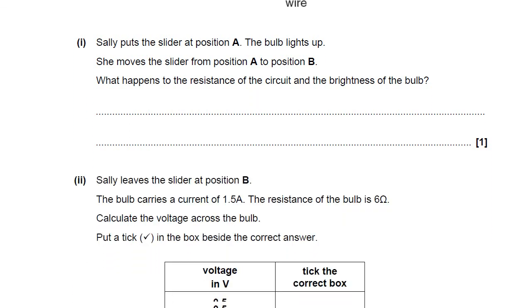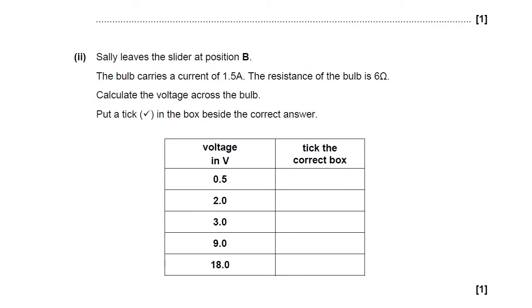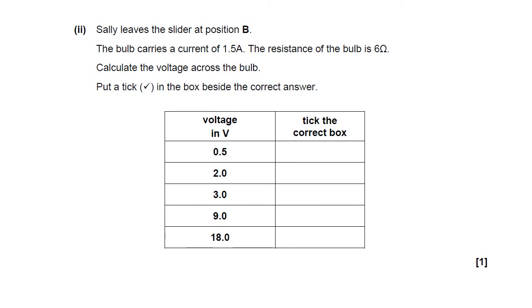Sally leaves the slider at position B. The bulb carries a current of 1.5 amps and the resistance of the bulb is 6 ohms. So we've got a current of 1.5 amps and a resistance of 6 ohms. You're asked to calculate the voltage across the bulb. This is a calculation, so go ahead and go to the equation sheet at the front of the exam paper, find the equation, think about the numbers you've got, and calculate your answer.